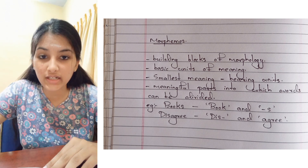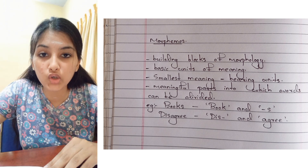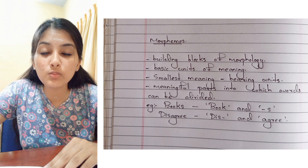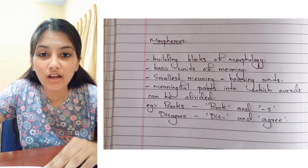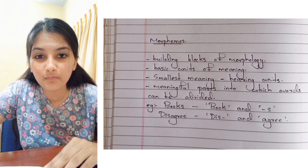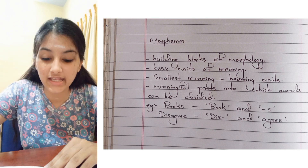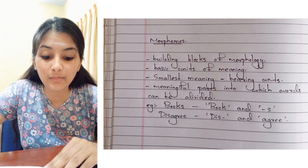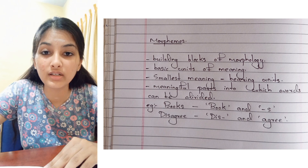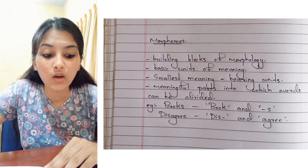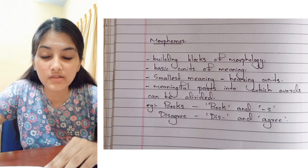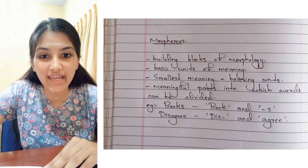For example, the word 'books' contains two morphemes: 'book' and 's'. Another example is the word 'disagree', which has two morphemes: 'dis' and 'agree'.